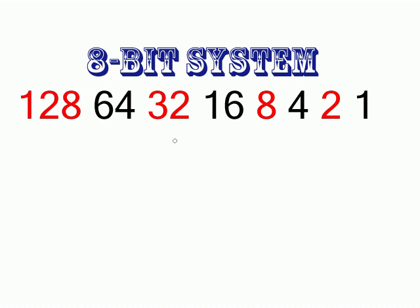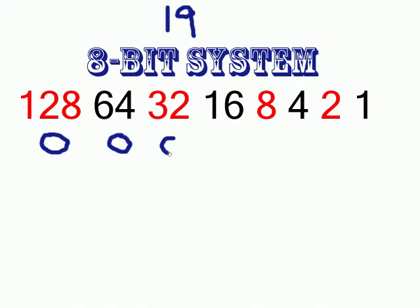Let's say you want the number 19. In a base 10 system you'd just write 1 and 9, but in our 8-bit binary system we have to work with bits: 128, 64, 32, 16, 8, 4, 2, 1. There's only one way to add these to create 19. You start with the biggest number — can 128 go into 19? No, put a 0. Can 64? Nope. Can 32? Nope. Can 16? Yes.